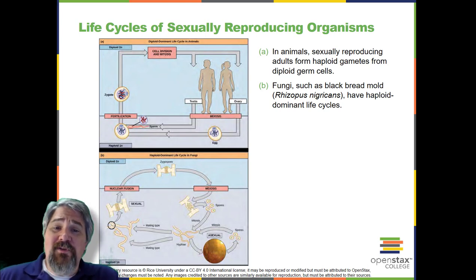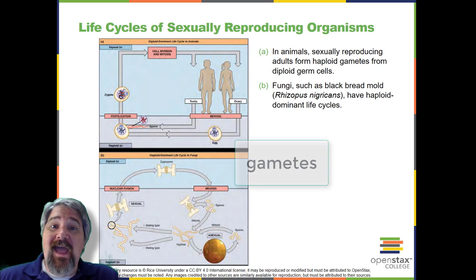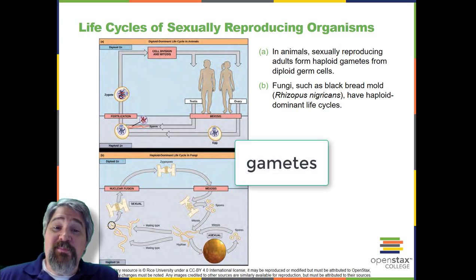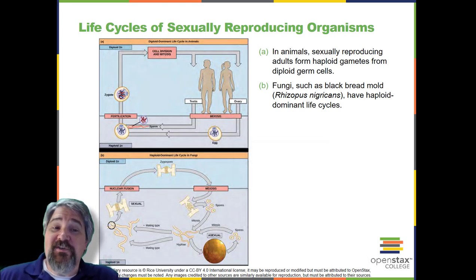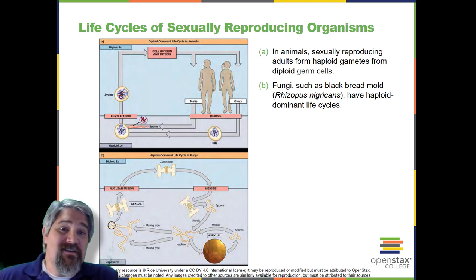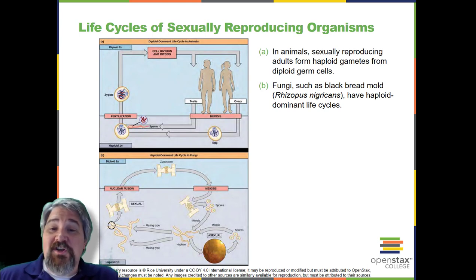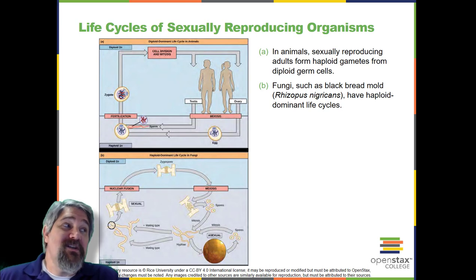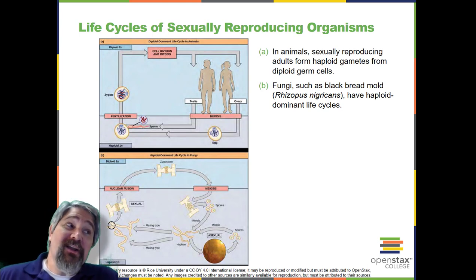Nearly all animals employ a diploid-dominant life cycle strategy, in which the only haploid cells produced by the organism are the gametes. The gametes are produced from diploid germ cells, a special cell line that only produces gametes. Once the haploid gametes are formed, they lose the ability to divide again. There is no multicellular haploid life stage. Fertilization occurs with the fusion of two gametes, usually from different individuals, restoring the diploid state. That references the top figure here on this slide.